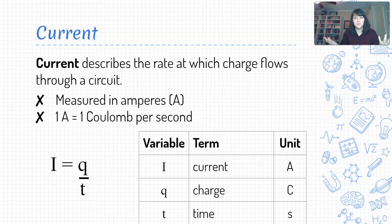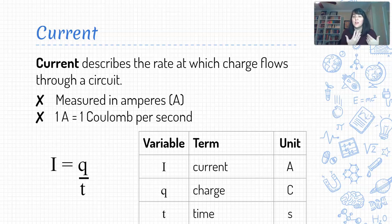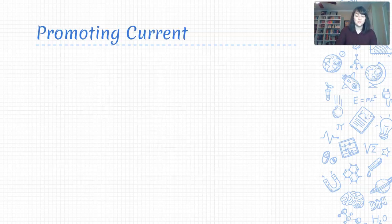So amperes are coulombs per second, and our equation for current is that we take our amount of charge in coulombs and divide by the amount of time — measured in seconds — it takes that charge to pass through our circuit. That's a straightforward definition of current: how we measure the rate at which charges are moving through our circuit.